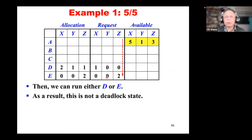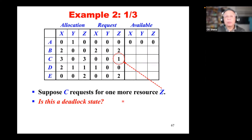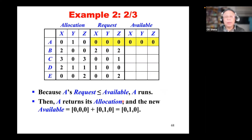Let's use the detection algorithm to determine whether this system is deadlocked. We scan top-down so we get consistent results — scanning bottom-up or randomly would give a different sequence but wouldn't change whether the system is safe. We find that A's request is less than or equal to available, so we run A. After A is done, A returns 0,1,0, so the new available becomes 0,1,0.